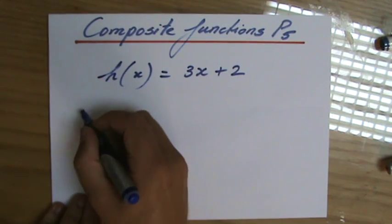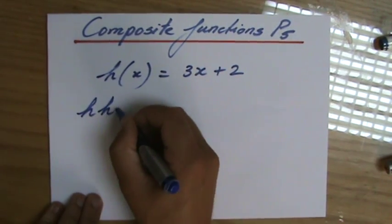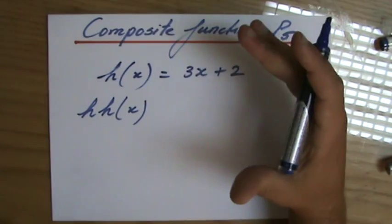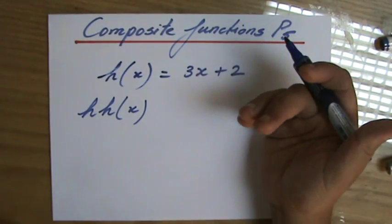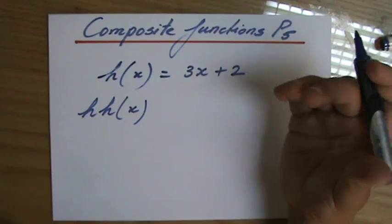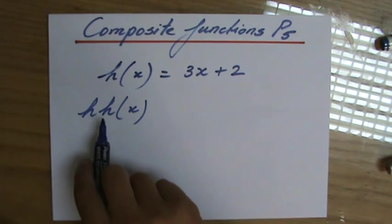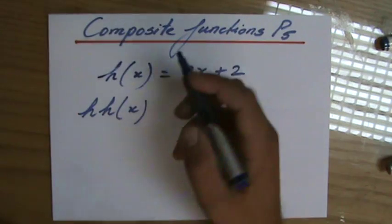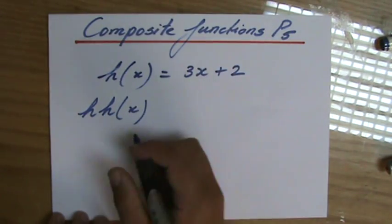Now they can also ask me, what is h(h(x))? Well, that's nothing to be scared of. So far, they always gave me two functions and I found a composite function. Now they give me one function but they want me to evaluate h for the function h. Does that make sense?